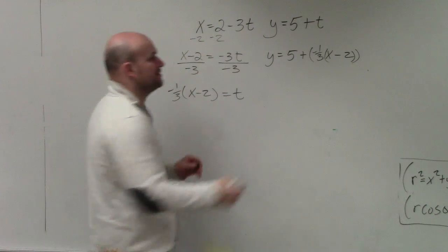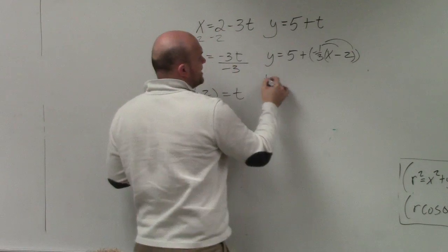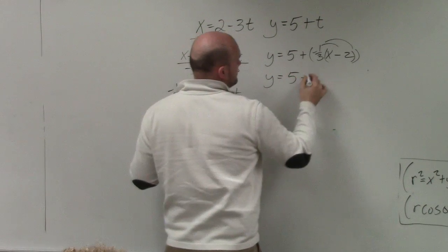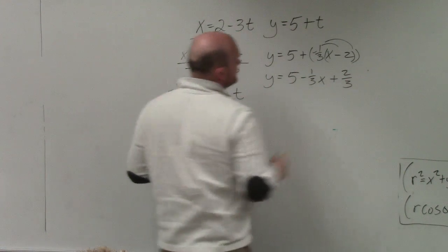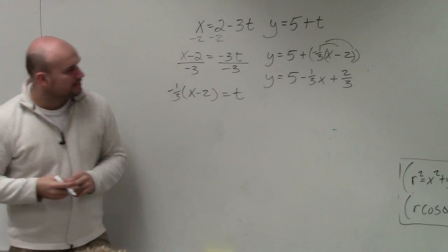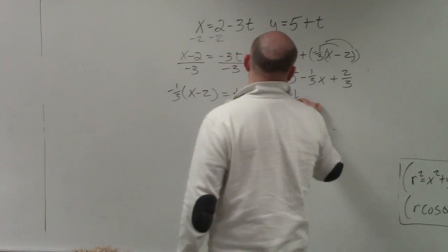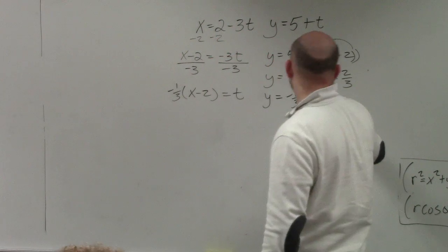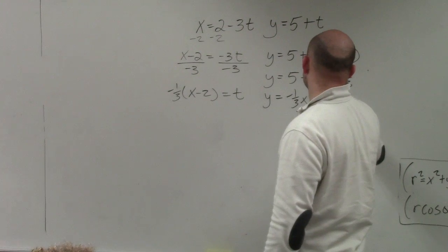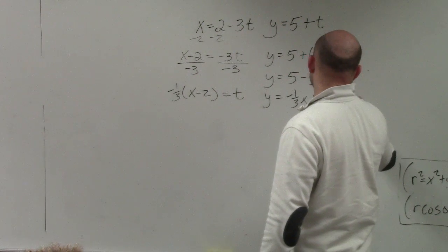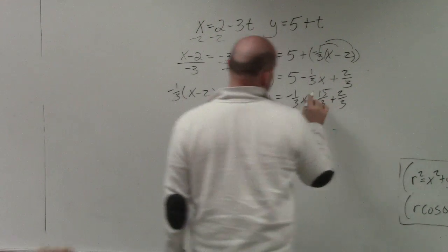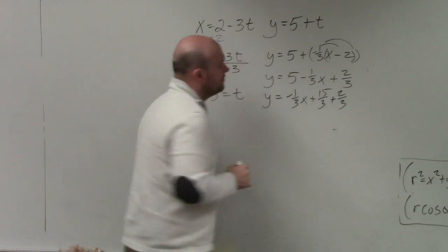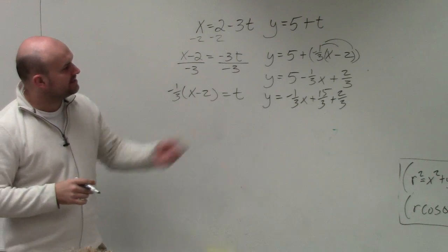Now I can distribute, so I can simplify. Let's see, that's going to be plus 15 over 3 plus 2 thirds. So therefore, that would be 17 over 3.